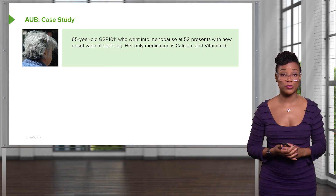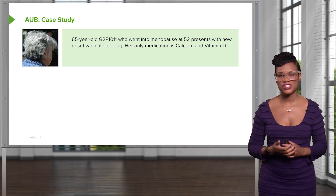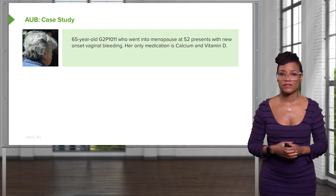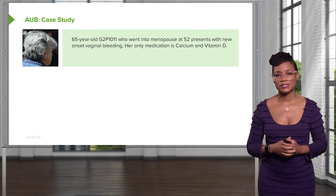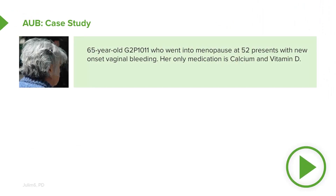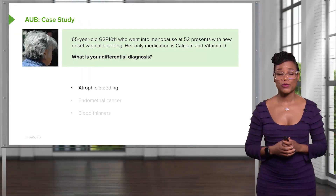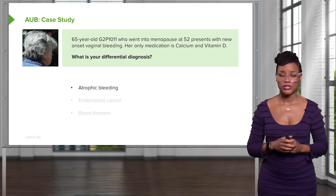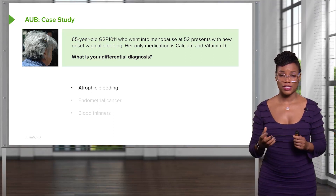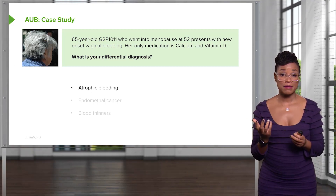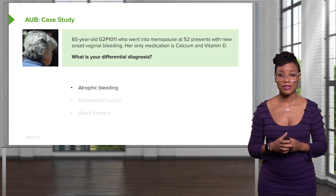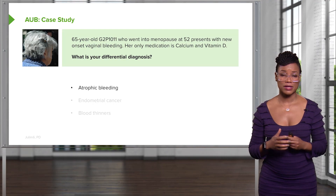Let's review another case of AUB. Here we have a 65-year-old woman, G2P1-0-1-1, who underwent menopause at 52 years of age — just a year after the normal average. She now presents with onset of vaginal bleeding. Her only medications include calcium and vitamin D, so she's pretty healthy. The first thing you should think about in your differential should be atrophic bleeding. She can have bleeding from her vagina due to atrophy — after estrogen stops being made, the vagina can become small or atrophic and can sometimes bleed with penetration or spontaneously. The lining of the endometrium can also thin and cause spontaneous bleeding.